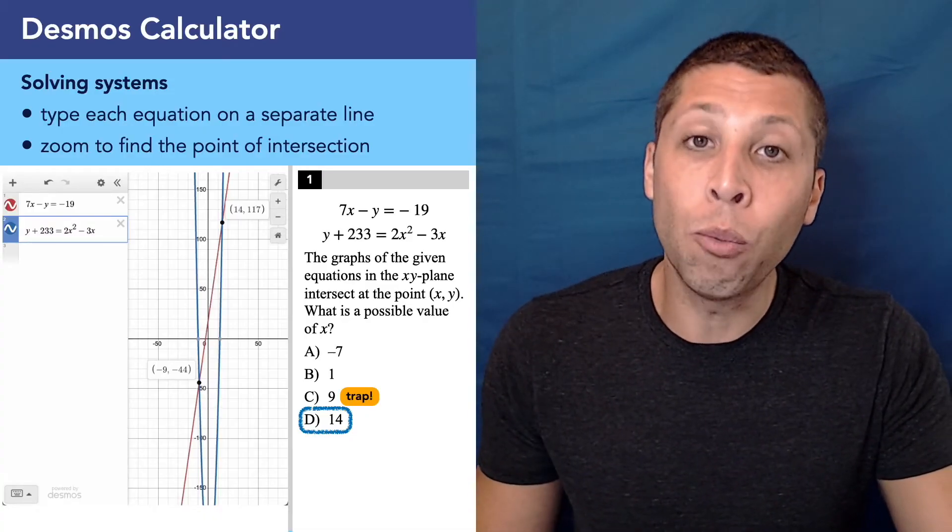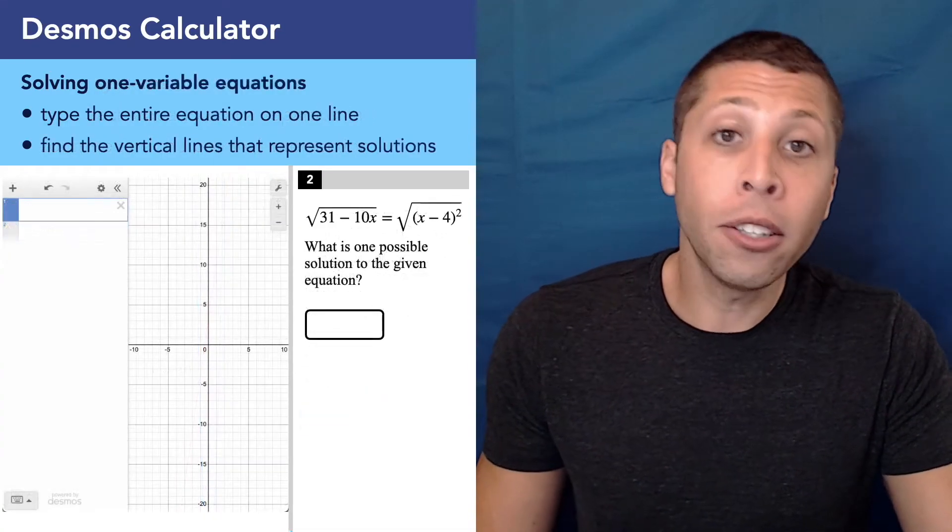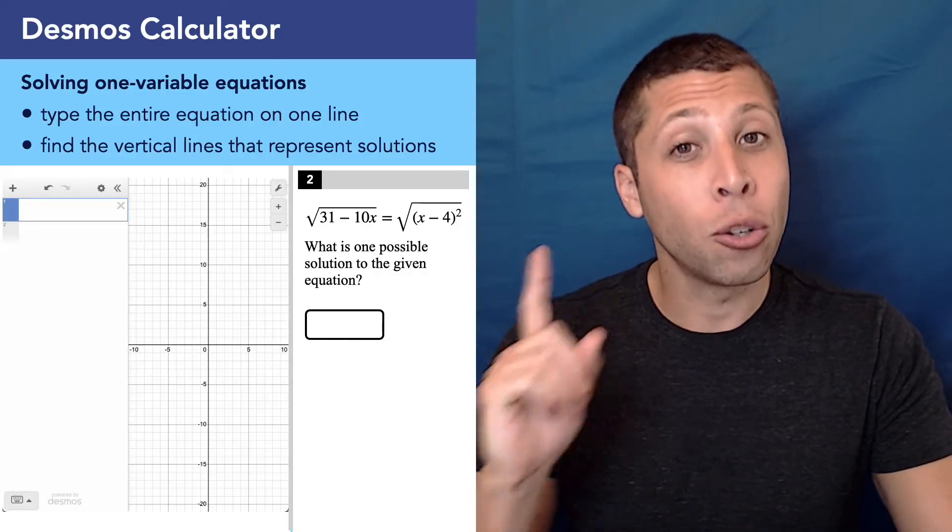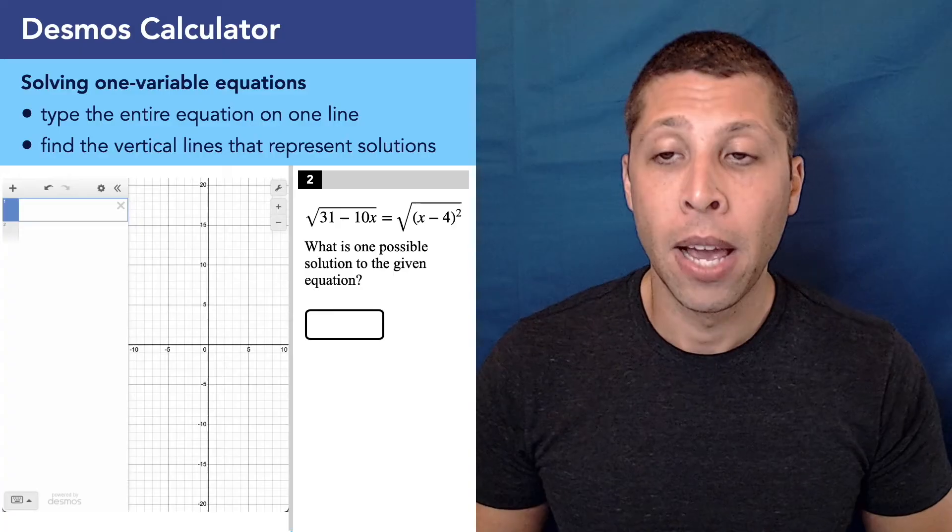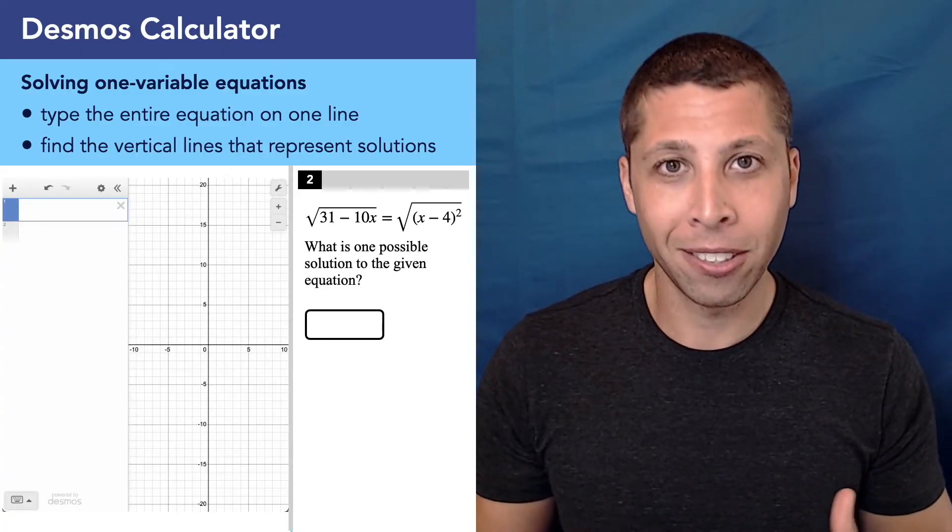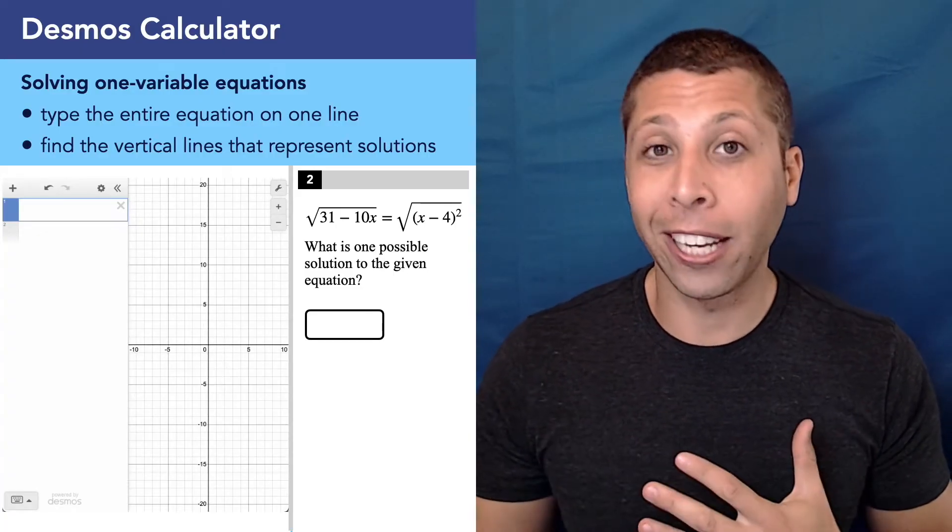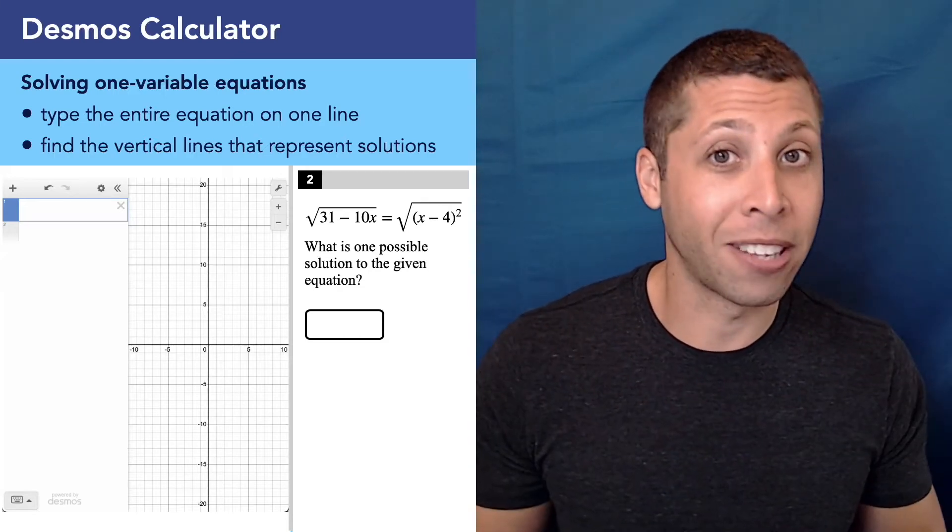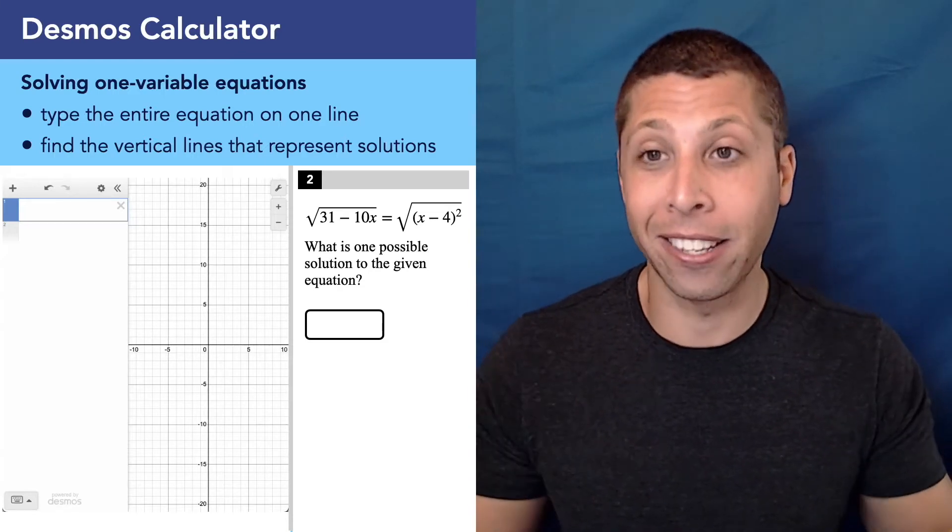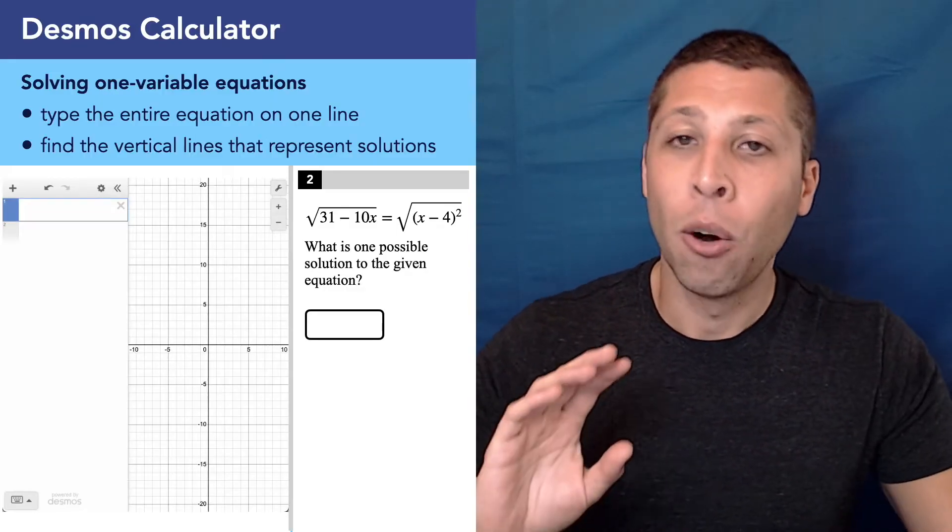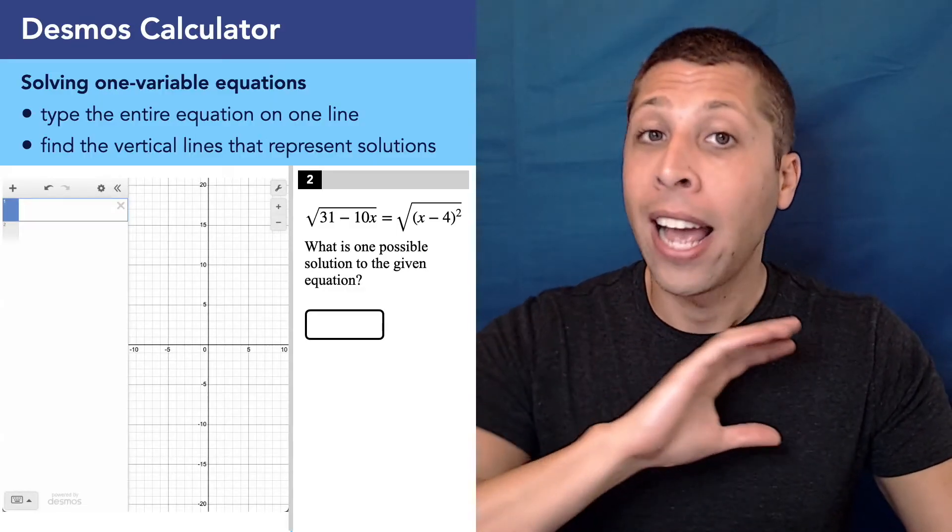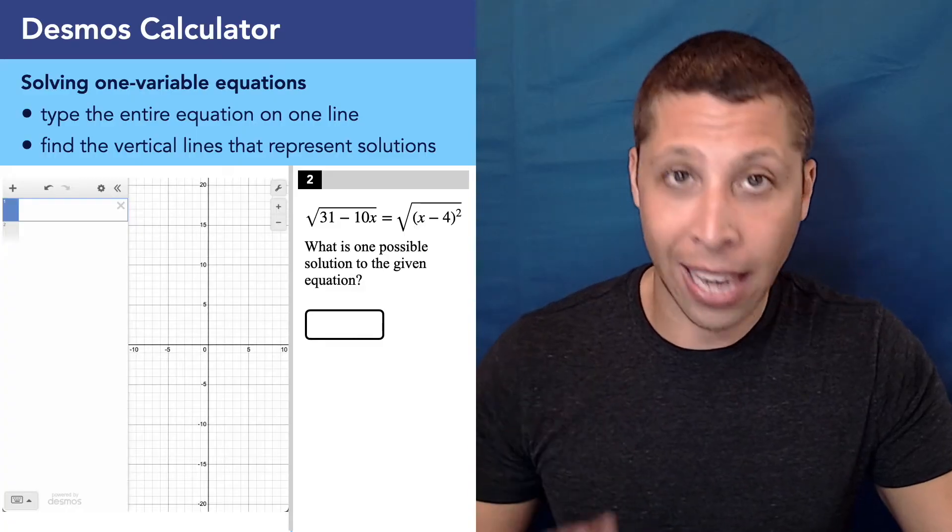Let's look at a slightly weirder situation. Here's another equation, but this time it's just one equation. Notice there's no Y coordinates, no Y variables here. So there are a couple of ways to handle this. Definitely though, if I were looking at it, I'd be like, I don't really want to solve this algebraically by hand because it's got square roots. It seems risky.